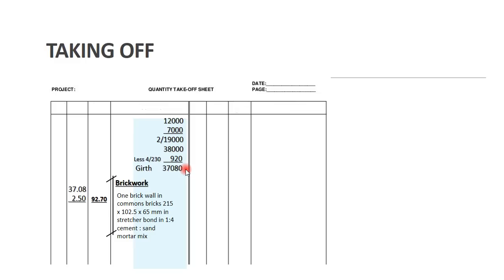One thing you need to note: if you are working out in meters on this side, you need to correct your working figures to three decimal places. But when you are transferring the dimensions to the dimension column, they have to be corrected to two decimal places. Once you have built the dimensions, you transfer them to the dimension column. So 37,080 mm, when converted to meters, is 37.080, and since it has to be corrected to two decimal places, you'll have 37.08 as our dimension.